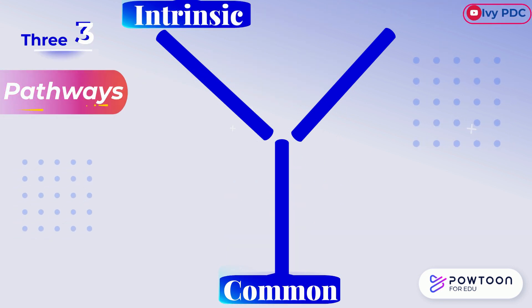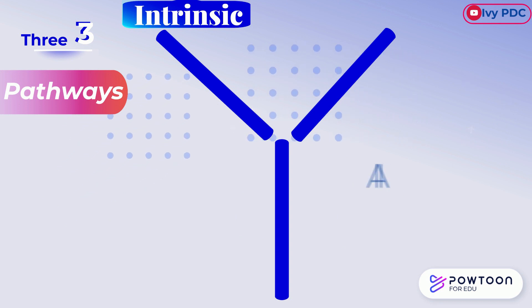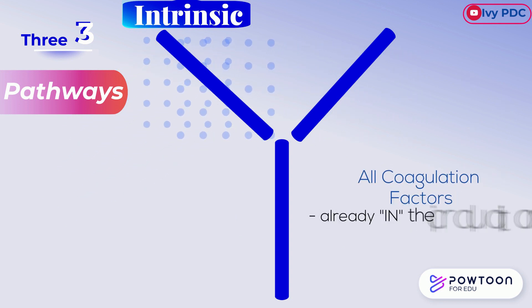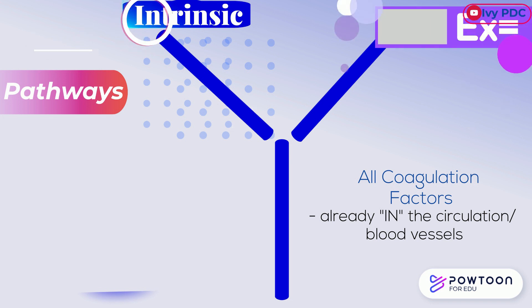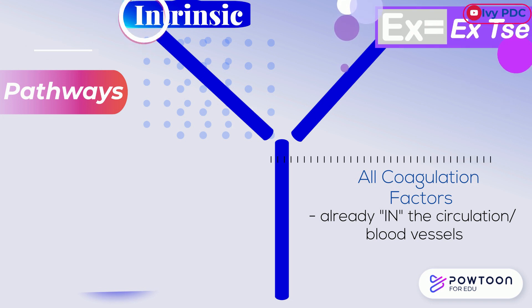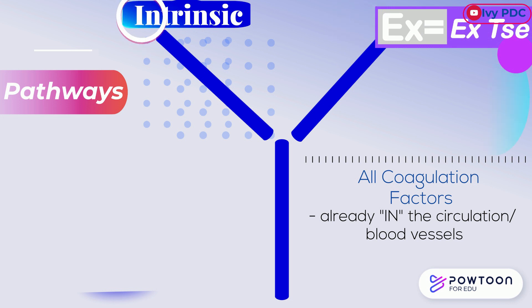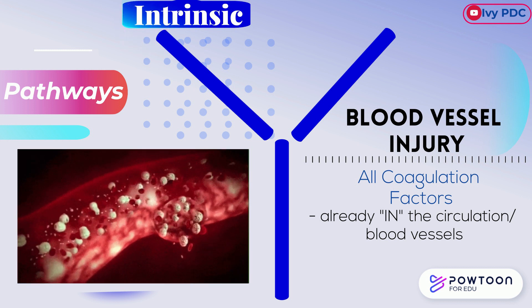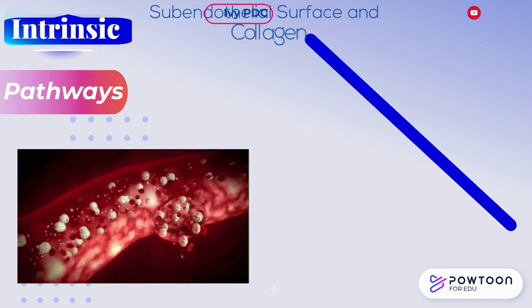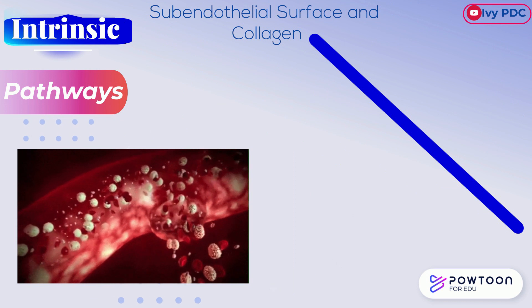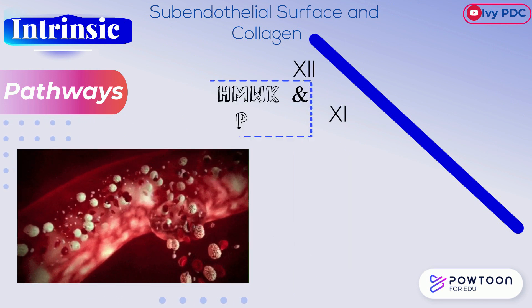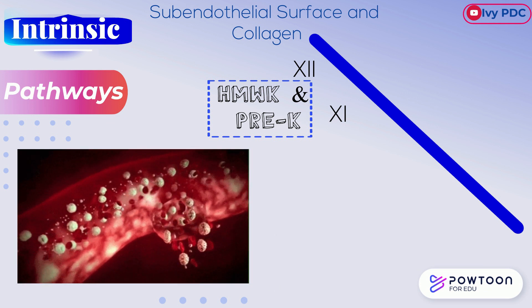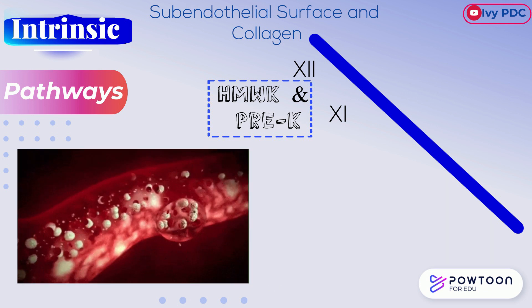The intrinsic pathway is named as such because all the required reactants for this pathway are already in the circulation or the blood vessels, unlike the extrinsic pathway that requires exposure to extravascular tissue factor for triggering. That is why an injury to the blood vessel can activate this pathway. When the subendothelial surface is contacted by coagulation factors 12, 11, high molecular weight kininogen, and pre-kallikrein, the contact activation of the intrinsic pathway begins.